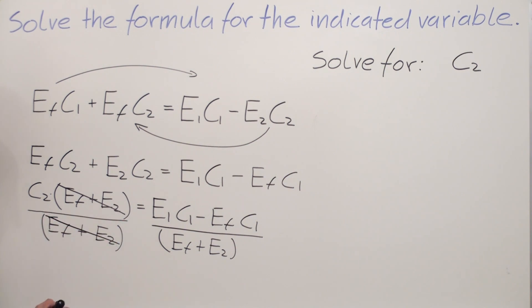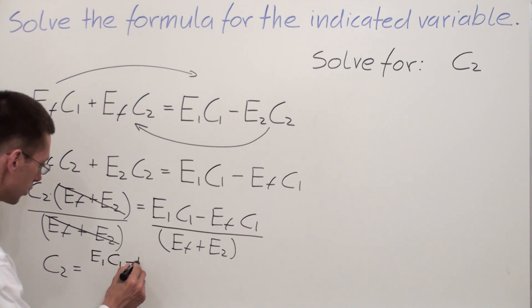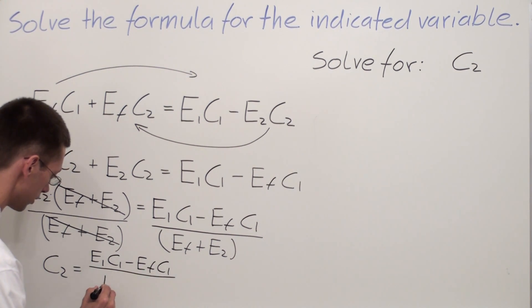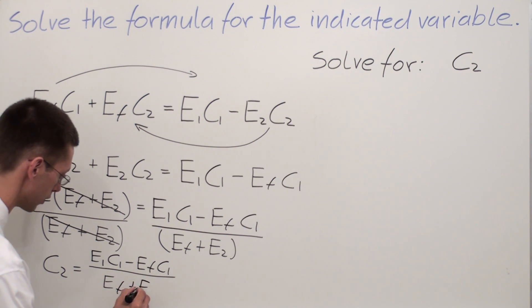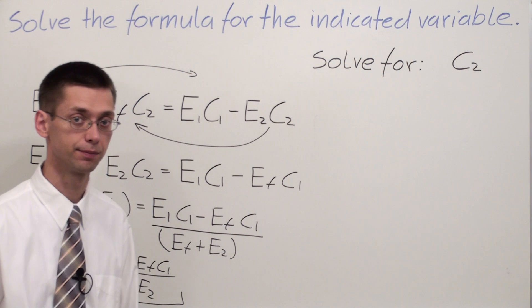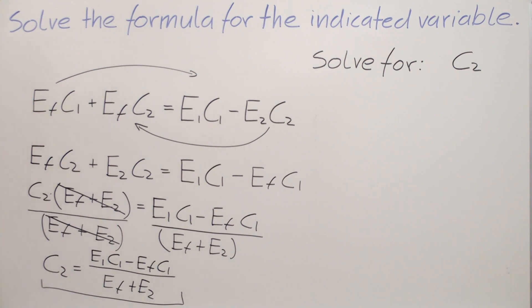EF plus E2 on the left side. And I am going to end up with C2 equals E1 C1 minus EF C1 over EF plus E2. This is my answer.